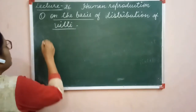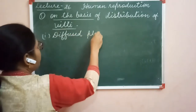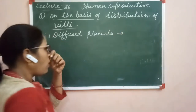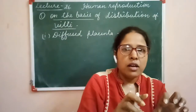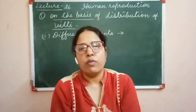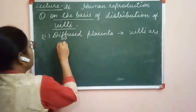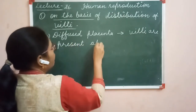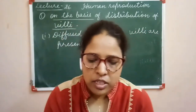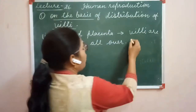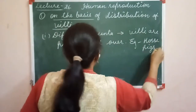On the basis of distribution of chorionic villi, the first type is diffused placenta. In this type, the chorionic villi are present all over the surface of the fetus — the complete part is covered with chorionic villi. This type of placenta is basically present in horse and pigs.